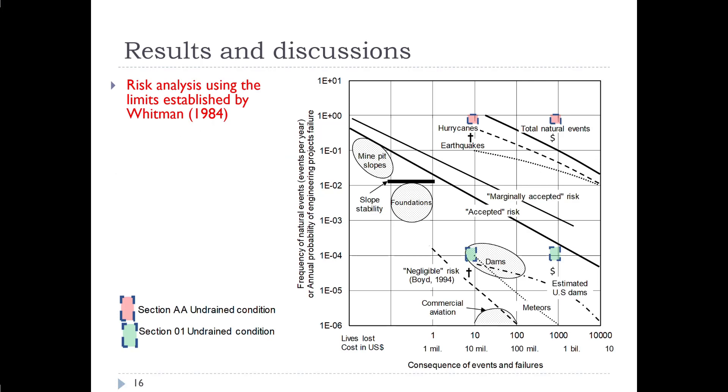Just to discuss this and to put this in context, this is a standard chart that shows our tolerance as a society to risk for different types of structures, including foundations, earth dams, commercial aviation. You can see on the vertical axis, the frequency of natural events or failures. And then on the bottom part of the chart is the consequence of these events and failures. What we're seeing is if we analyze in terms of undrained conditions, if we analyze section 01 in undrained conditions, we see that the green areas plot below the accepted risk level, which is reasonable for this structure.